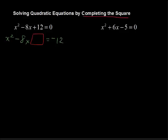What do we want to put in there? We're going to take half of this middle coefficient, so negative 8 divided by 2, and then square it. And that's what we're putting in. So negative 8 divided by 2 is negative 4, and negative 4 quantity squared. Remember, negative times a negative is a positive, so I'm putting in positive 16.